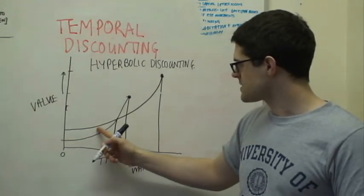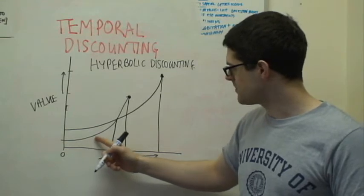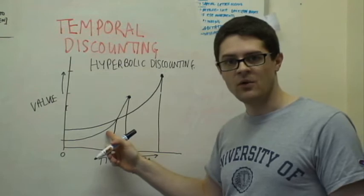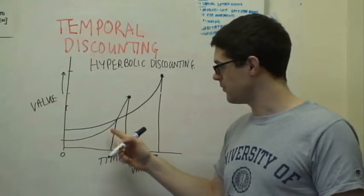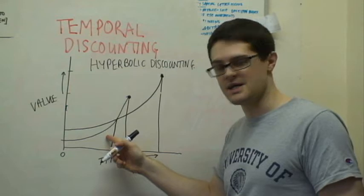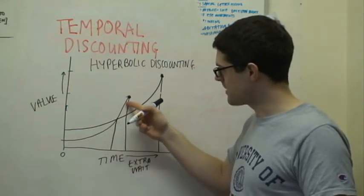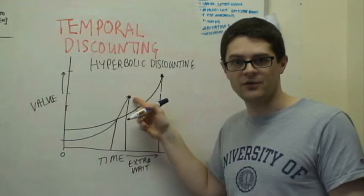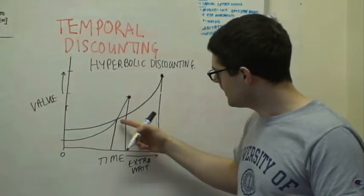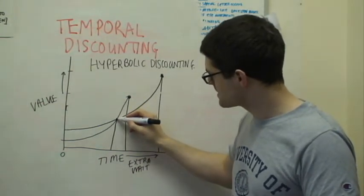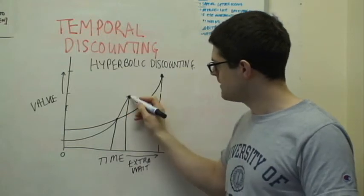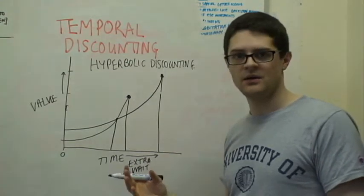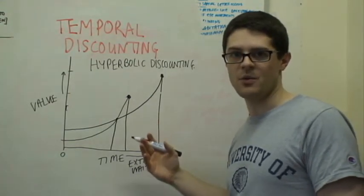But what you'll see, as time goes by, what happens is the value of the smaller but more immediate reward gets discounted much less. So its value just goes rapidly up and up to its true value of 100 pounds, for example. And at this point, the value of the smaller but more immediate reward becomes higher than the larger but delayed reward.